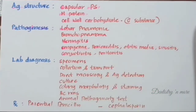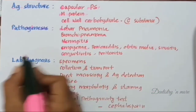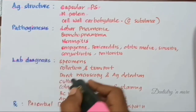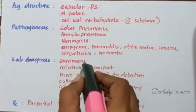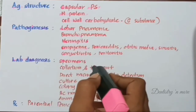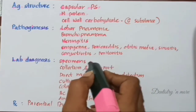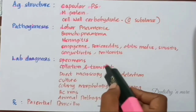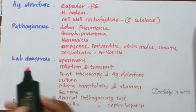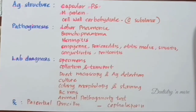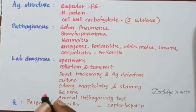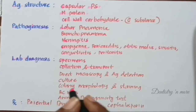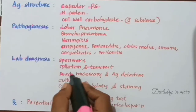For lab diagnosis, specimens include clinical samples such as sputum, cerebrospinal fluid, pleural exudates, or blood, collected according to the site of lesion. All specimens should be collected in sterile containers under aseptic conditions and processed immediately. If there is any delay, CSF should not be refrigerated — it should be kept at 37 degrees Celsius.